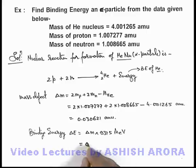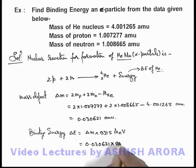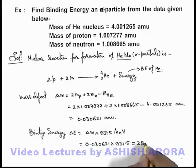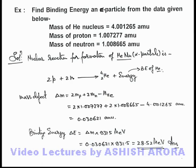So on simplifying, 0.030621 multiplied by 931.5, which is 28.52 million electron volt. That is the answer of this problem.